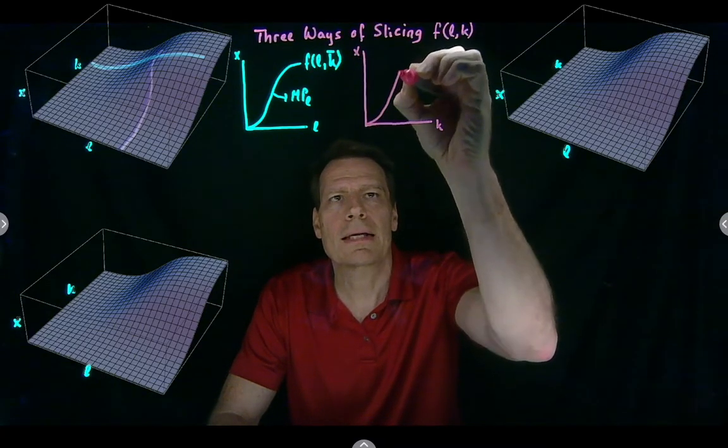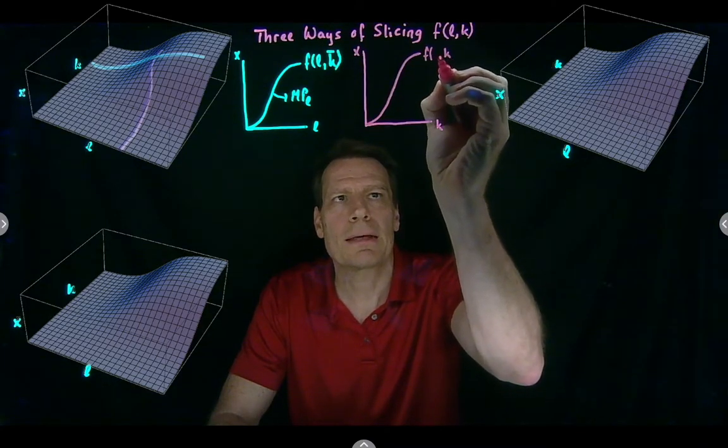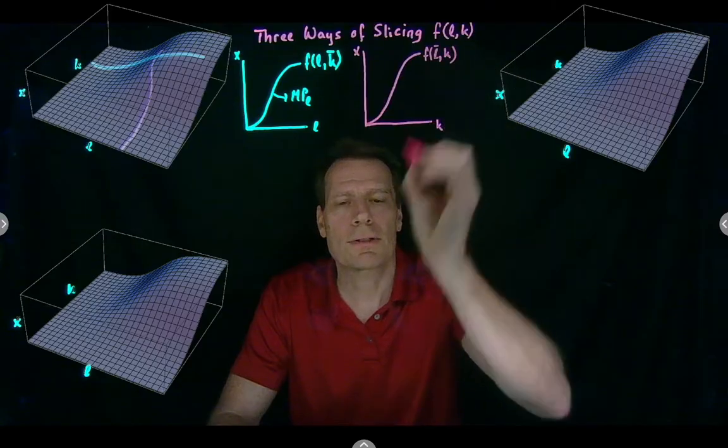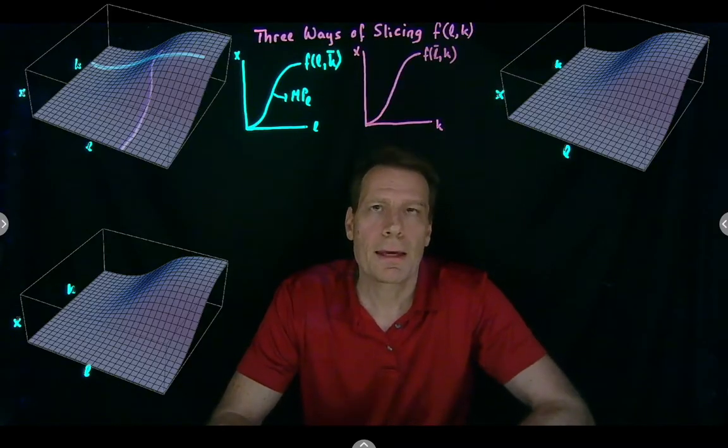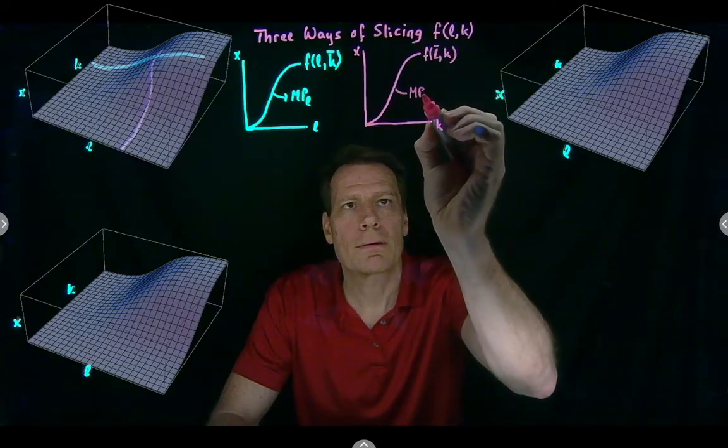A slice that looks like this, the slice that holds labor fixed and just varies capital. And the slope of this would be the marginal product of capital.